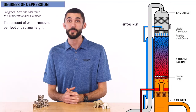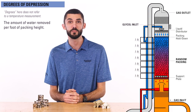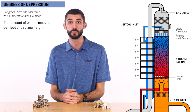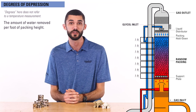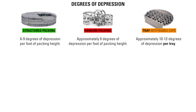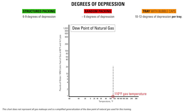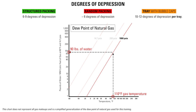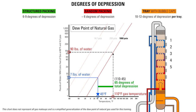The degrees of depression, or the amount of water removed per foot of packing height, is used to determine the most efficient and correct height requirements for an absorber in order to remove enough water from the natural gas flow stream. Structured packing can range from 6 to 9 degrees of depression per foot of packing height, while random packing has approximately 6 degrees of depression per foot. Tray towers can achieve approximately 10 to 12 degrees of depression per tray. For example, if you're starting at 110 degrees gas temperature and 1,000 psi absorber pressure, that gives you 90 pounds of water. If you need to be at or under 7 pounds of water, you would need 65 degrees of total depression through the tower, which on a tray tower would translate to at least 7 trays.